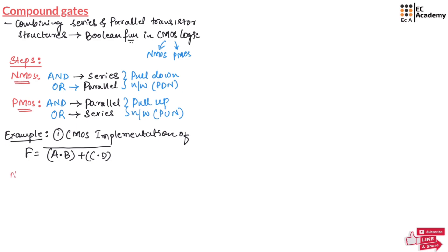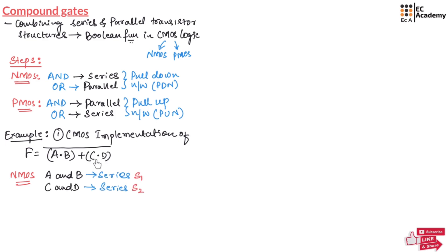Now let us understand how we can implement using NMOS. Since there is A AND B we can implement this in series — let us call this S1. We are also having C AND D, which can again be implemented in series — let us call this S2. Between S1 and S2 there is an OR operation, which should be implemented using a parallel combination of NMOS, so S1 and S2 should be connected in parallel.